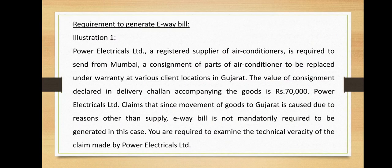The goods to be moved to another state for replacement under warranty is not a supply; however, Rule 138(1) of the CGST Rules 2017 stipulates that every registered person who causes movement of goods of consignment value exceeding rupees 50,000, either in relation to supply, for reasons other than supply, or due to inward supply from an unregistered person, shall generate an e-way bill before commencement of such movement. The CBIC has also clarified that even if movement of goods is caused due to reasons other than supply, including replacement of goods under warranty, an e-way bill is required to be issued.